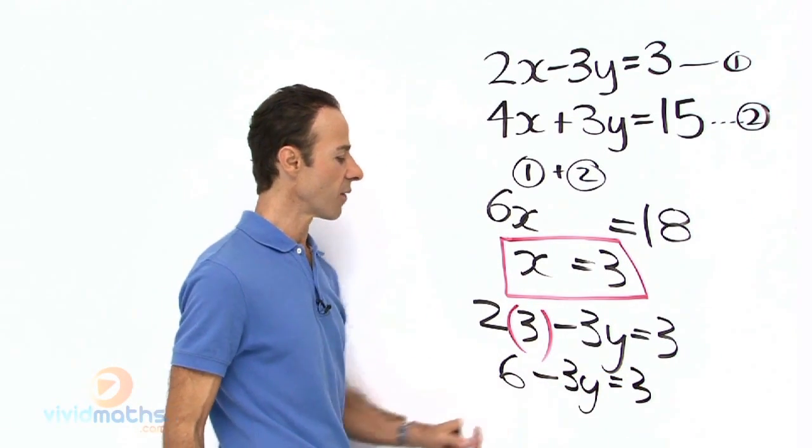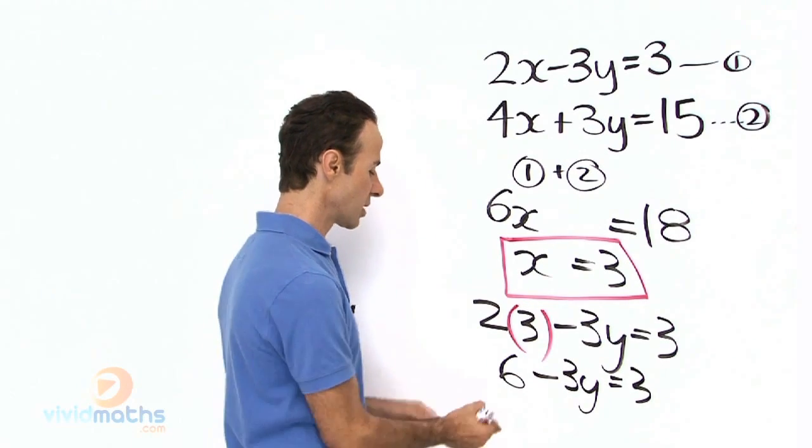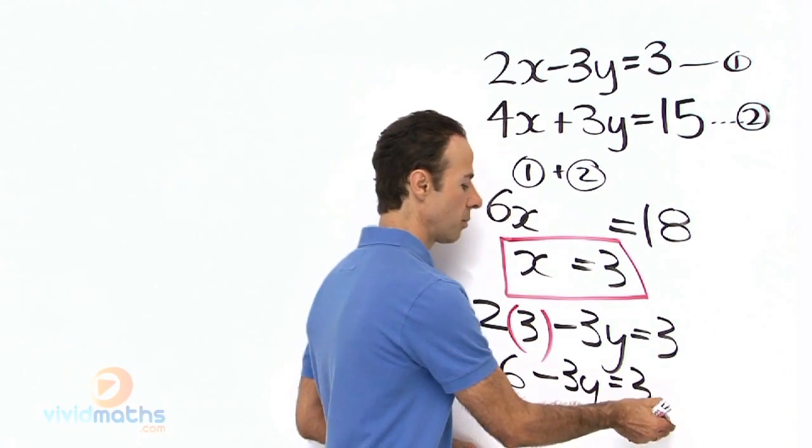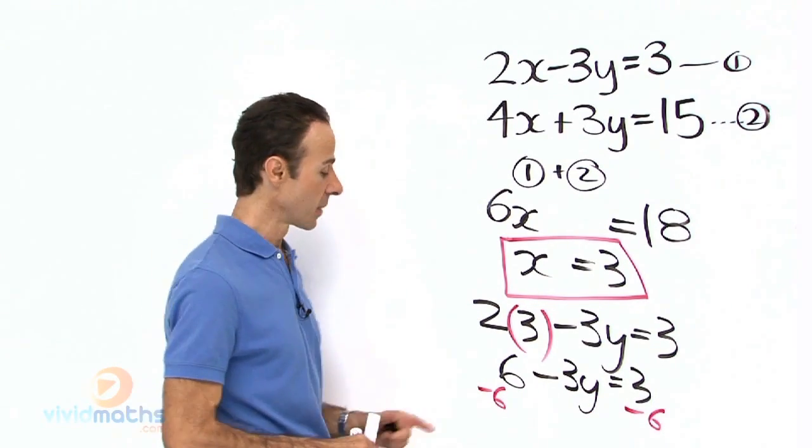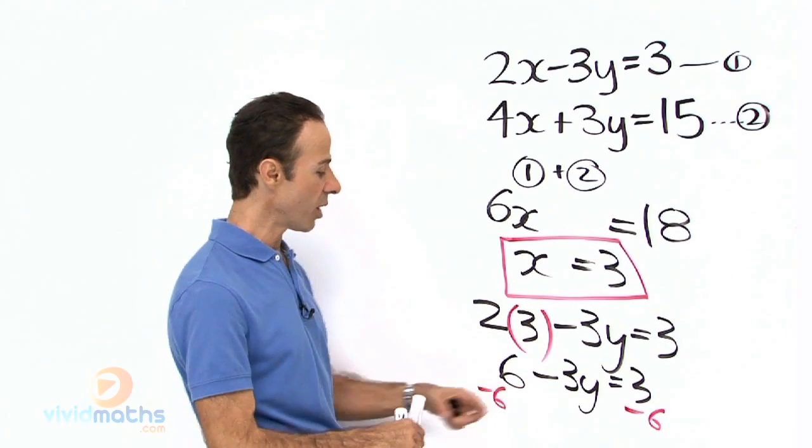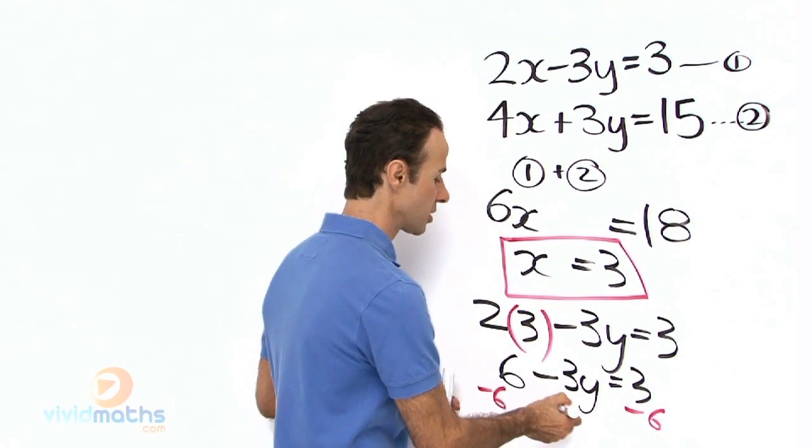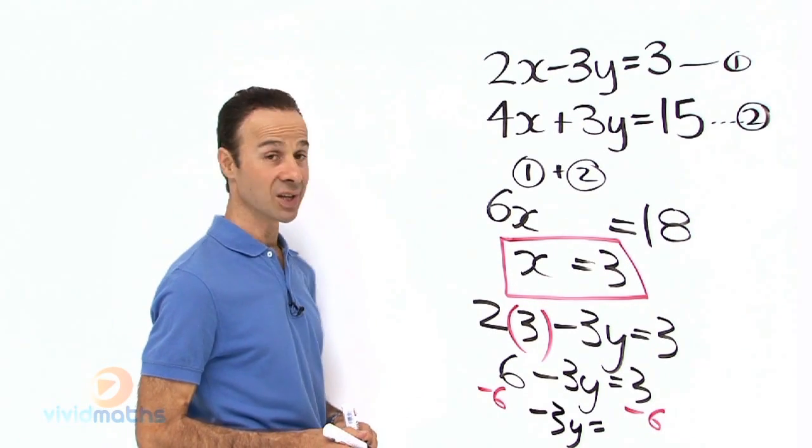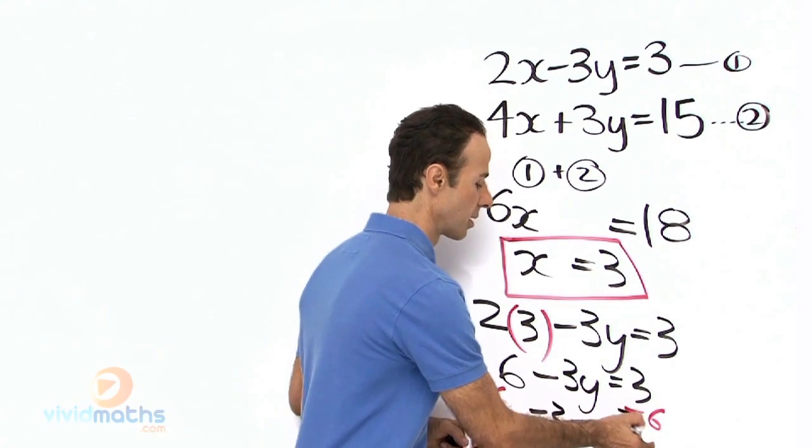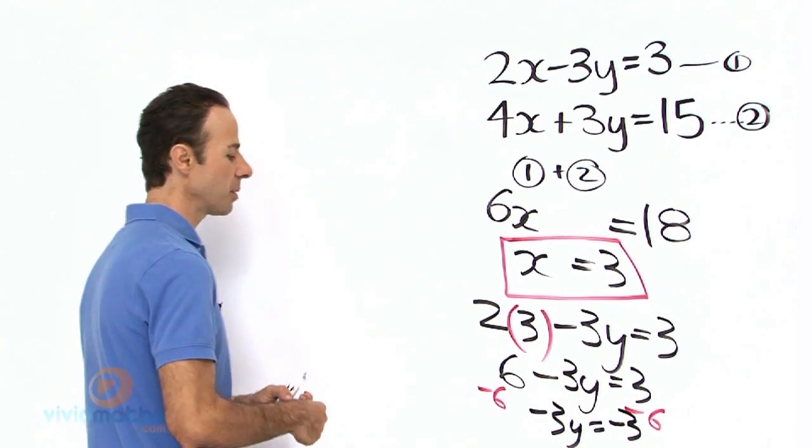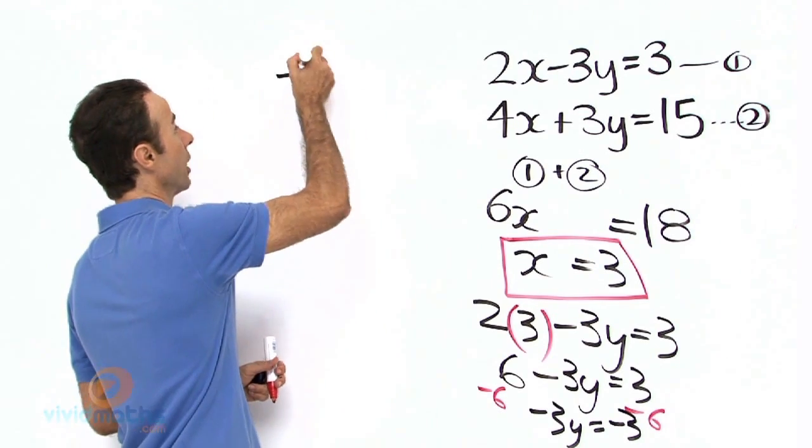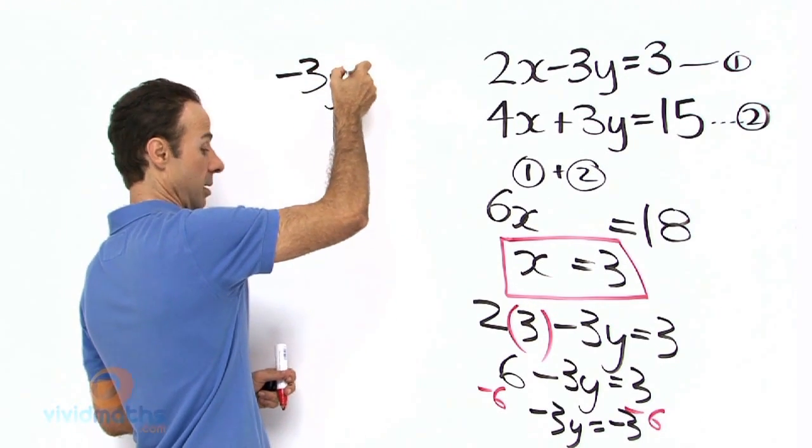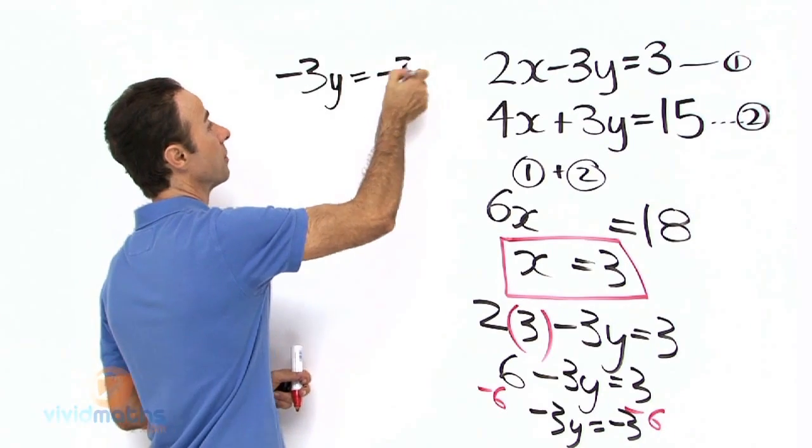Let's take away 6 from both sides, -6 here and -6 from the right hand side, and we're left with -3y equals 3 minus 6, which is -3. Let's write that back up here at the top: -3y = -3.